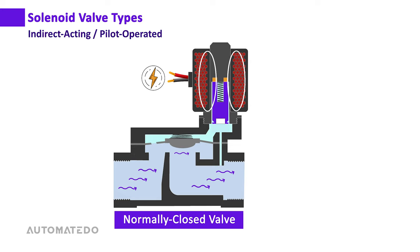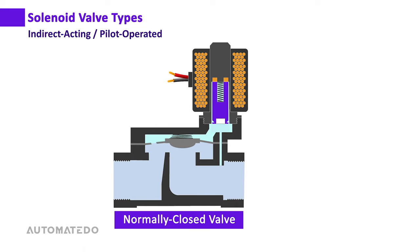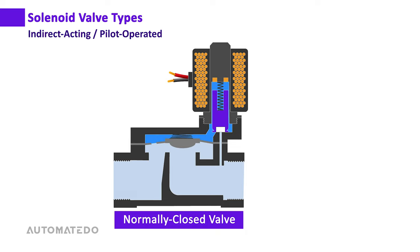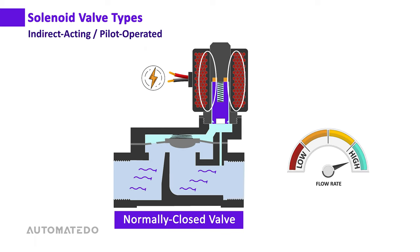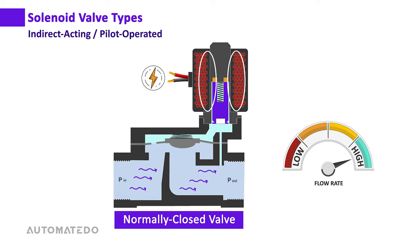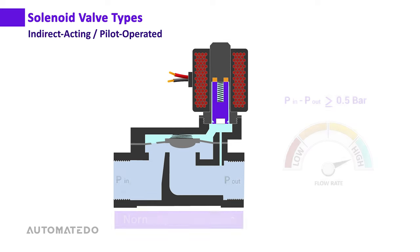As a result, the diaphragm is raised, allowing media to flow freely from inlet to outlet. When the solenoid is de-energized, the plunger falls due to spring force, closing the pilot orifice. Pressure accumulates in the upper chamber, shutting the valve again. The indirect acting solenoid valve is used in high flow rate applications and requires a minimum differential pressure of around 0.5 bar between inlet and outlet.